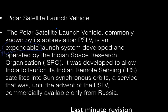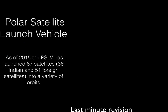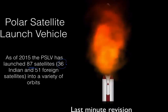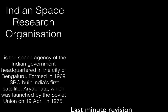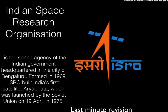PSLV is the launching vehicle used to launch satellites. As of 2015, PSLV has launched 87 satellites — 36 are from India and 51 are foreign satellites — into a variety of orbits. The first satellite they launched was Aryabhata, done with the help of a Russian team.